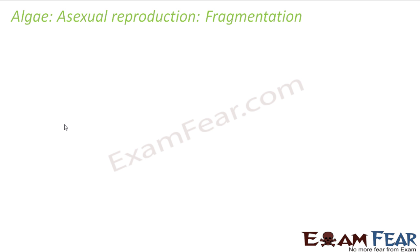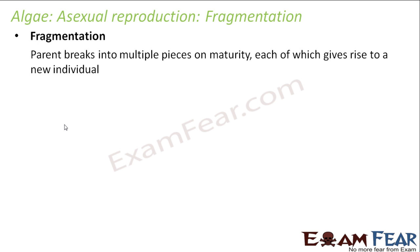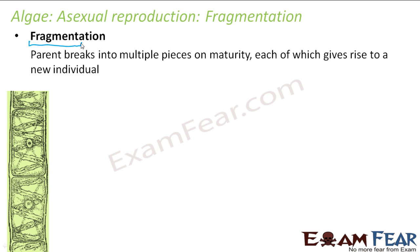There are different modes of asexual reproduction. Fragmentation is one mode of reproduction in algae. What happens in fragmentation? The parent organism breaks into fragments — fragment means pieces. One organism will break into different pieces and each of those pieces will give rise to a new individual. That is how it happens in case of some algae.